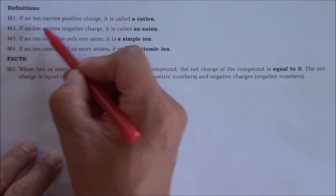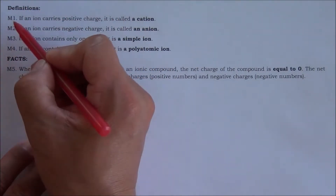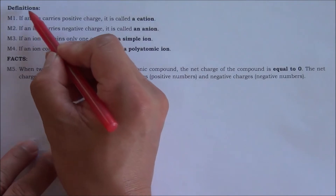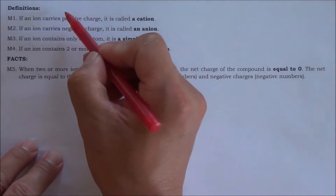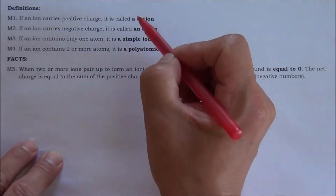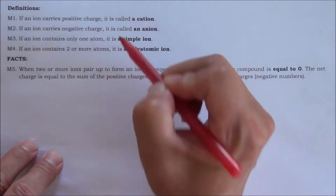Here are some definitions I want you to memorize. Number one: if an ion carries positive charge, it is called a cation.